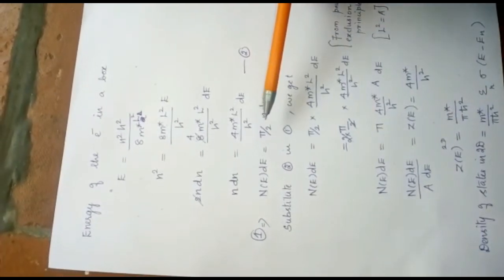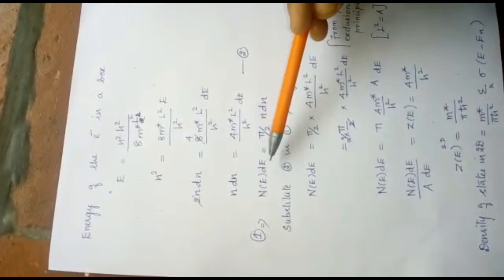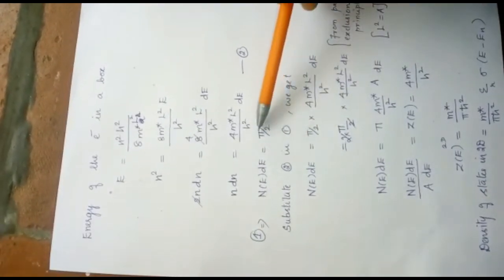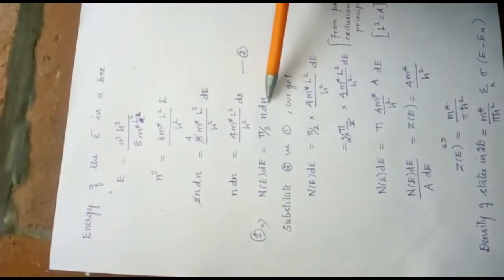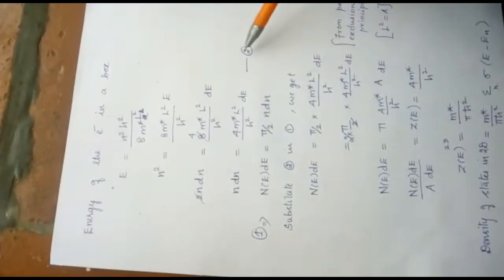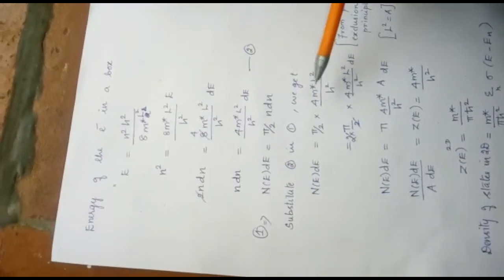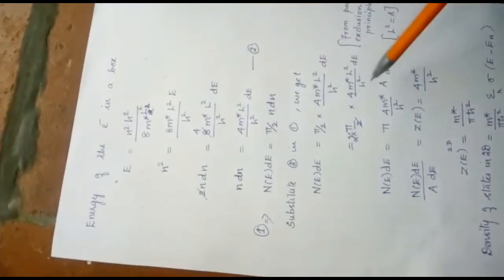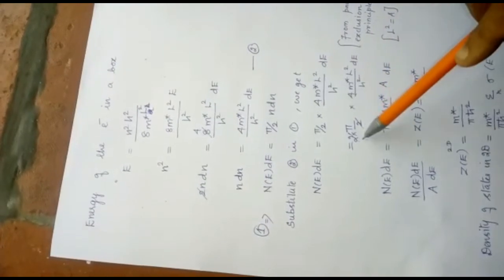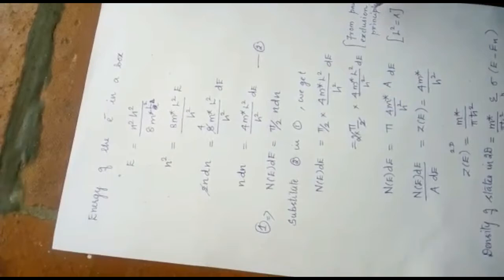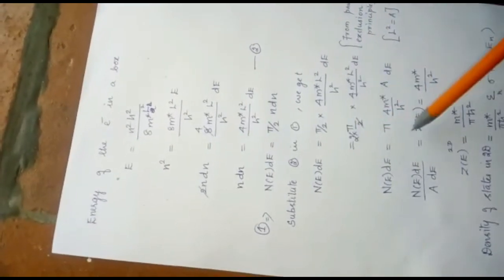Then we know from equation 1, the density of number of energy states per unit volume n of E dE is equal to pi by 2 n into dn. Now we are going to substitute this equation 2 in equation 1. We are getting this value. Then, after solving this, here we are putting 1, 2 because according to Pauli exclusion principle, we are putting this 2.